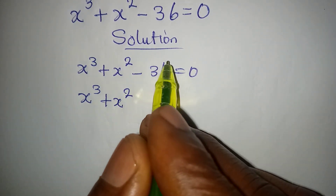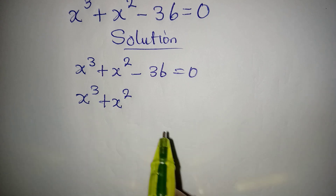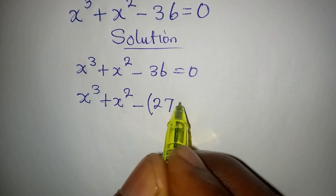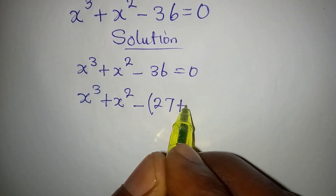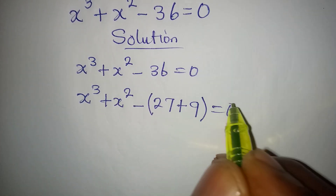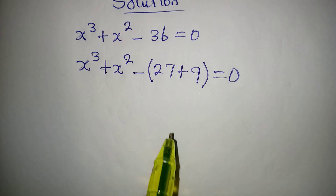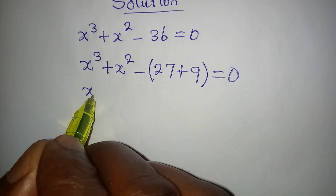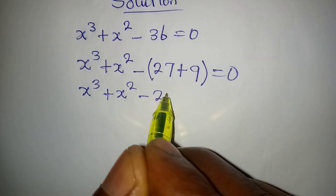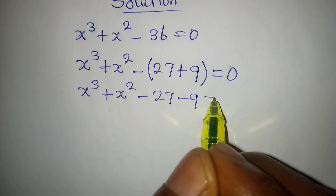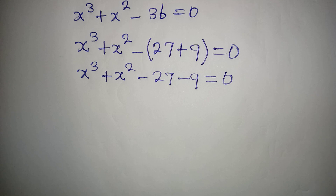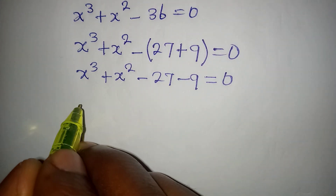We need to break 36 into two parts so that we can group and factorize. I'm going to split 36 into 27 and 9, so the equation remains equal to 0. Opening the bracket, we have x to the power of 3 plus x to the power of 2 minus 27 minus 9 equals 0.